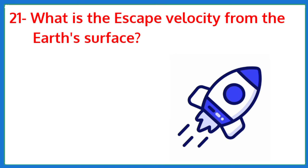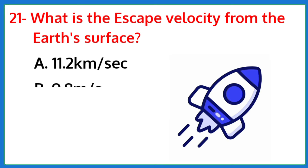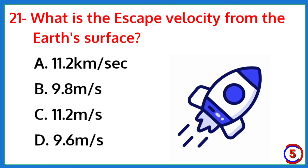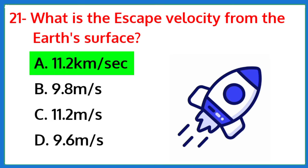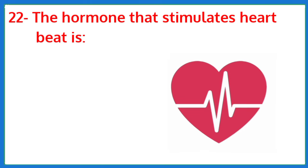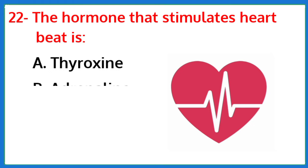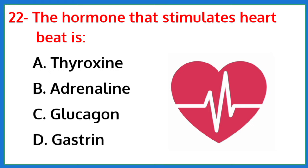What is the escape velocity from the Earth's surface? The correct answer is option A: 11.2 kilometers per second.